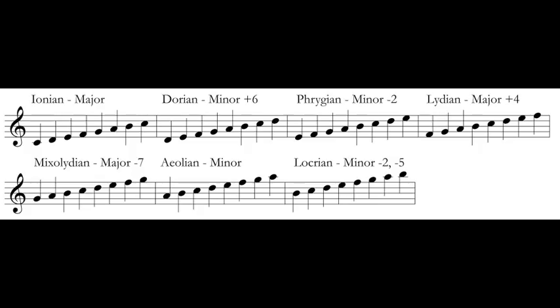The Dorian mode is the same as our C major scale starting on D. You can also think of it as a natural minor scale with the raised sixth scale degree. The Phrygian mode is the same as our C major scale starting on E. You can think of it as a natural minor scale with a lowered second scale degree. The Lydian mode is our C major scale starting on scale degree 4; we can also think of it as a major scale with the fourth scale degree raised.